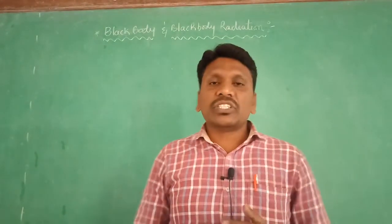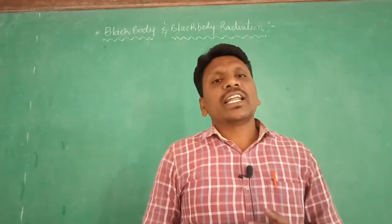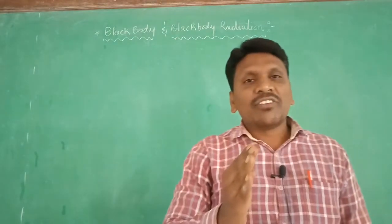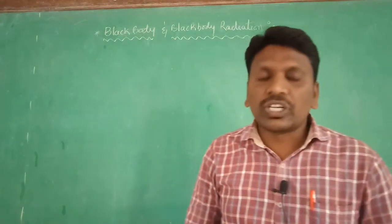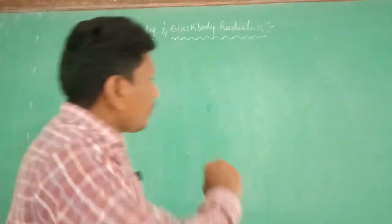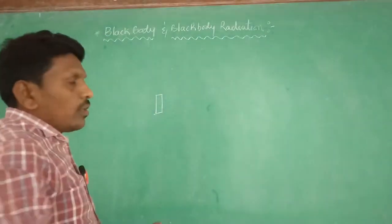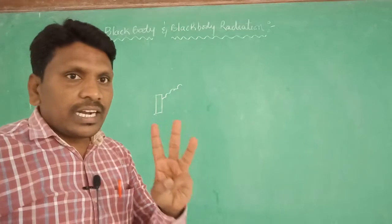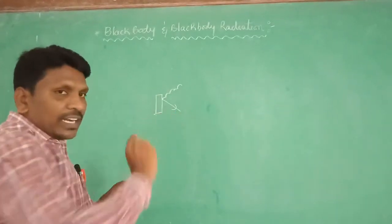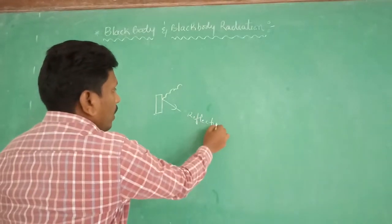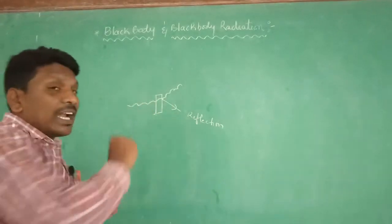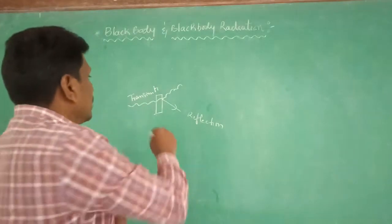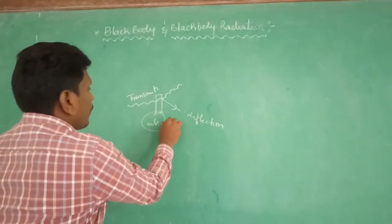From that, quantum mechanics was introduced in the 20th century based on black body radiation. Now, what is a black body and what is black body radiation? Generally, when light is incident on objects, there are three possibilities: the light may reflect (reflection), the light may transmit (transmission), or the light may be absorbed (absorption).